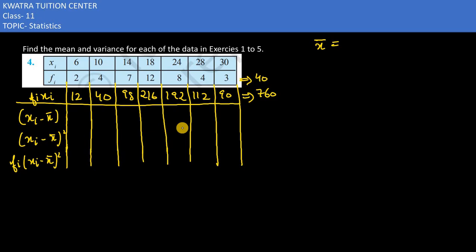So what we do is divide the summation fi xi by summation fi. So you would have 760 divided by 40. Canceling 76 with 4, this would give you 19. This is our mean.